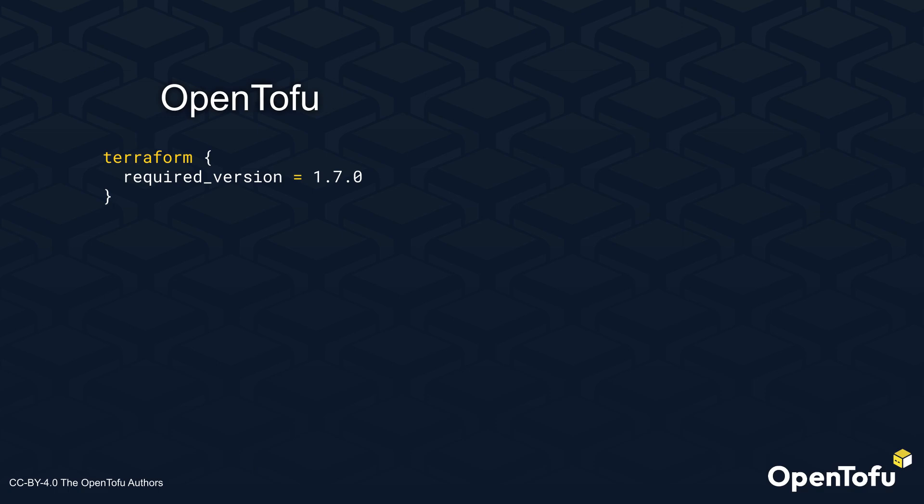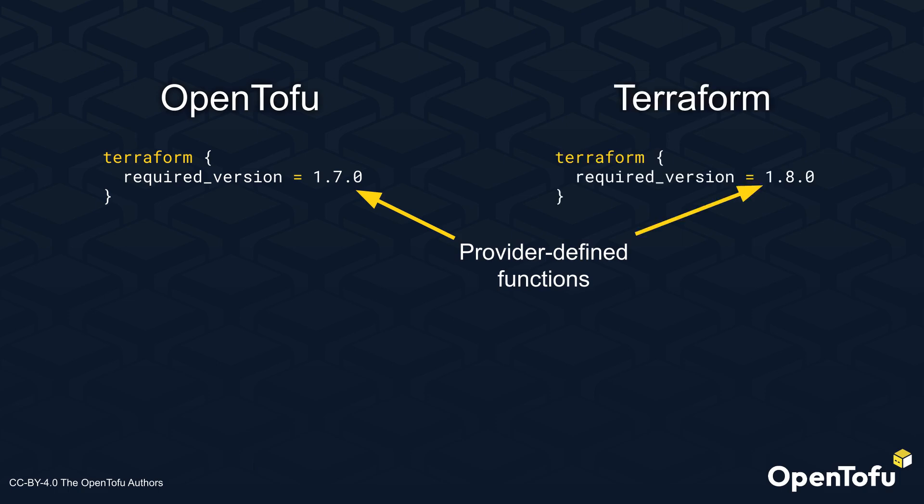If someone runs your code with an outdated version, they will get an error message prompting them to update. For example, if you want to use provider-defined functions, you would want to make sure that your users have at least OpenTofu version 1.7. This becomes a problem if you want to write code that works in both OpenTofu and Terraform, since OpenTofu introduced provider-defined functions in version 1.7 and Terraform did so in 1.8.